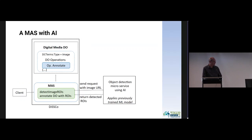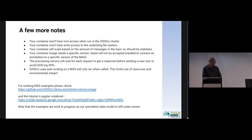This is an example of how you can create a service using AI — for instance, by sending a request to an object detection microservice from your annotation service. There are security measures in place: you won't have root access, and you won't have write access to the underlying file systems. Additionally, your service is not allowed to flood an external API — we wait for a response from an external API before sending out the next call.